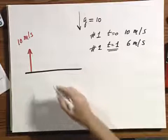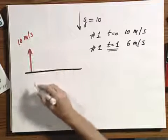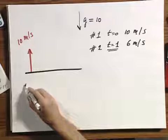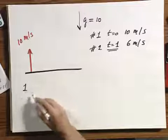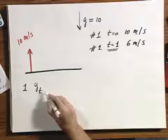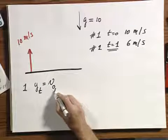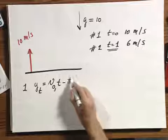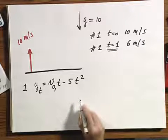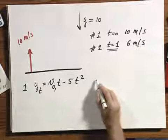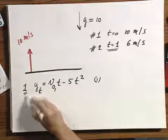Let us write down the equations of the position for object number one. For object number one, I know that y as a function of t equals v zero for object number one times t minus five t squared. I call it equation number one. This is for object number one.